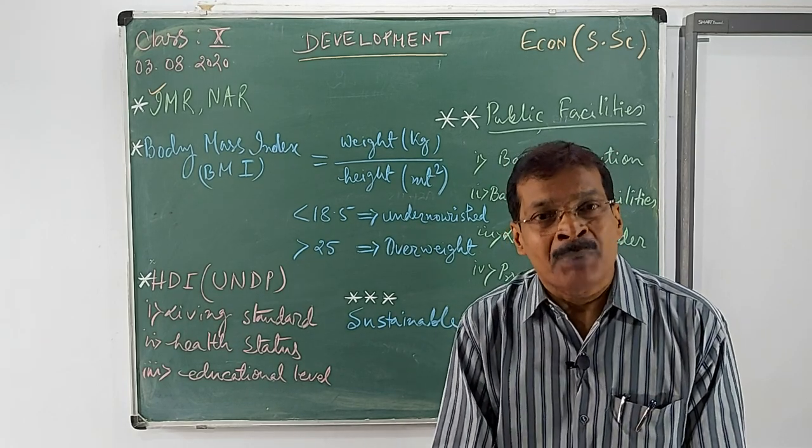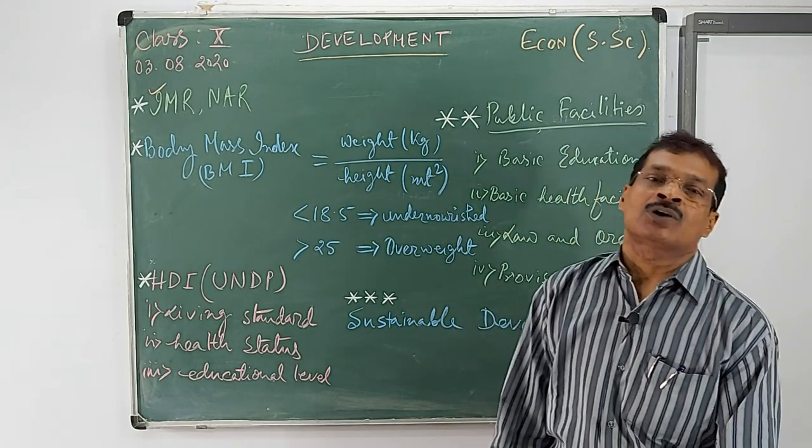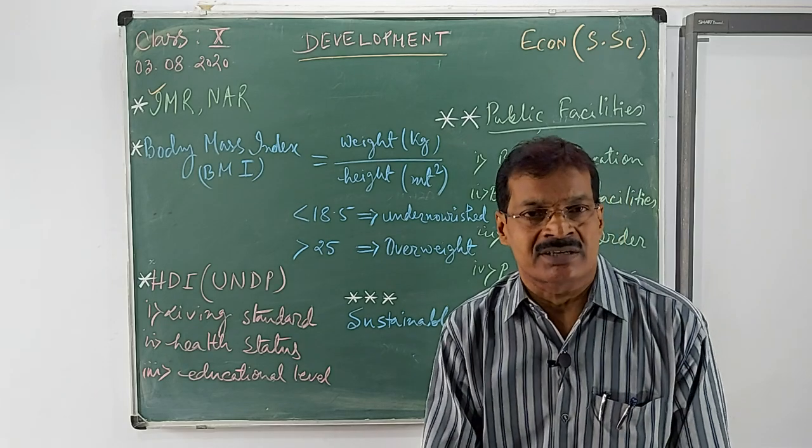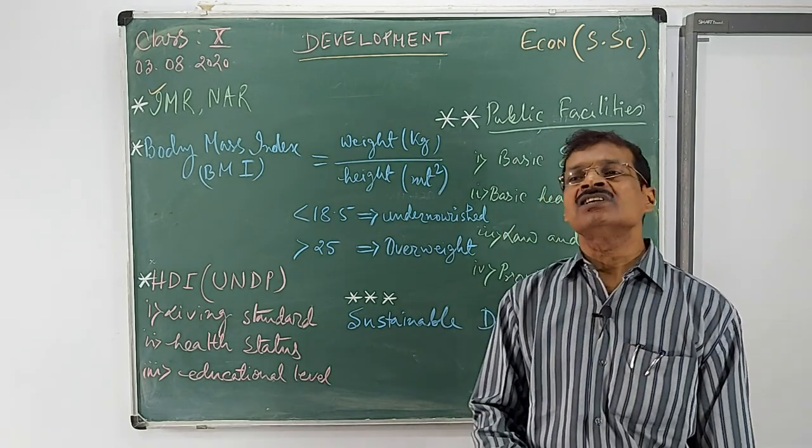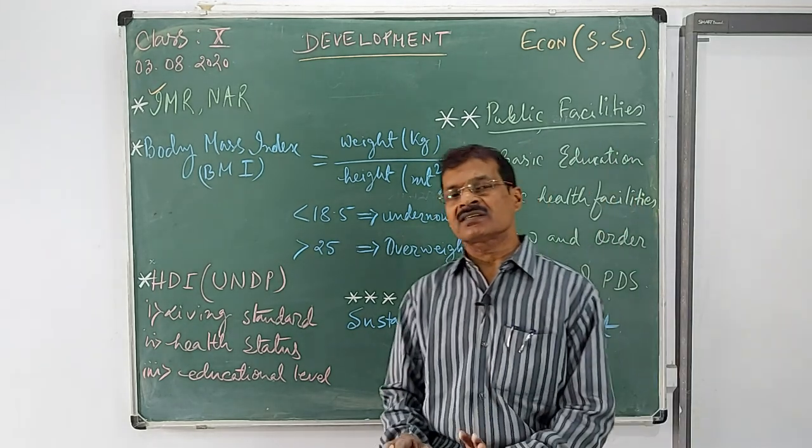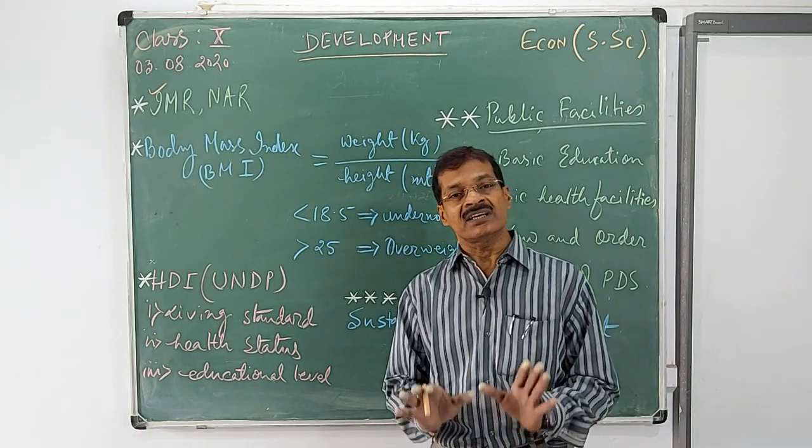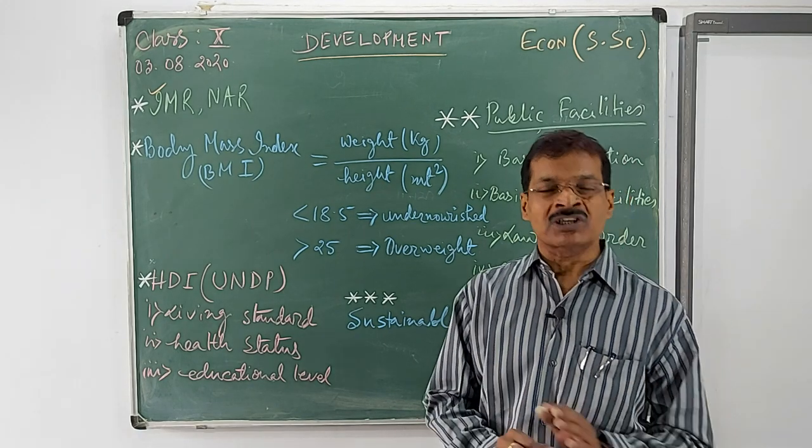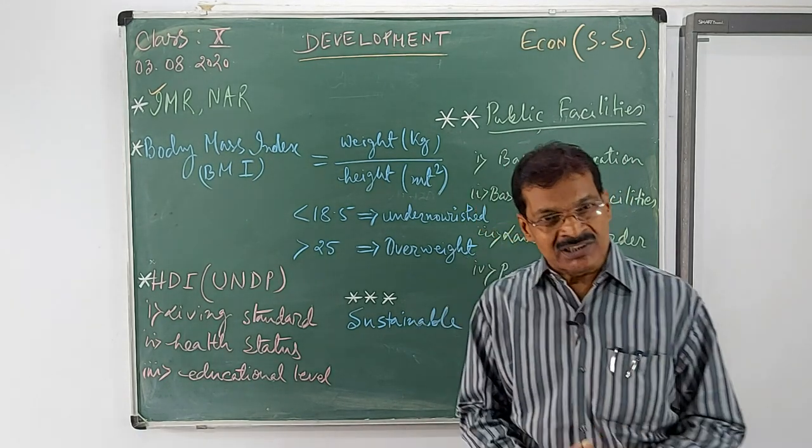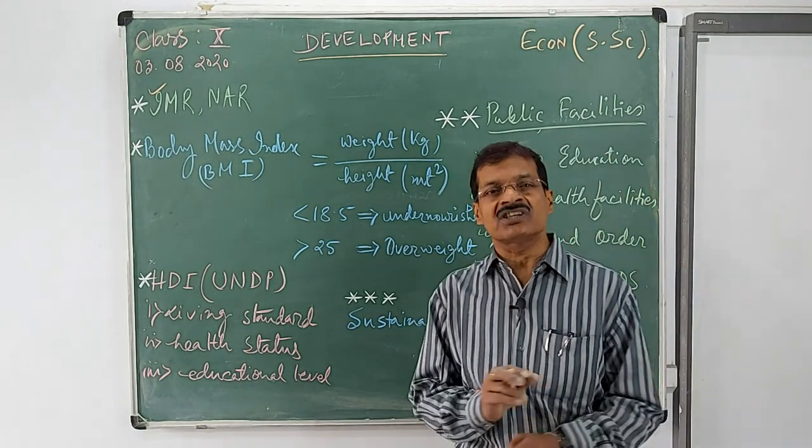So the number of children died before reaching age one per thousand is called infant mortality rate. When we talk about mortality rate, it's the number of persons died per thousand in a year.